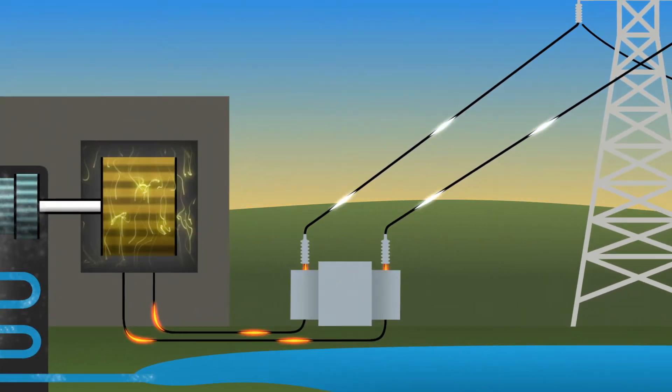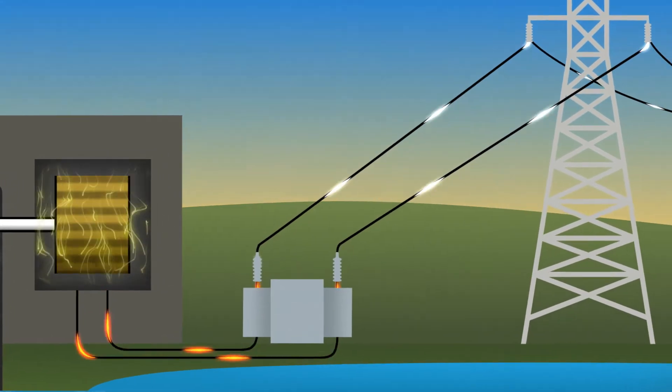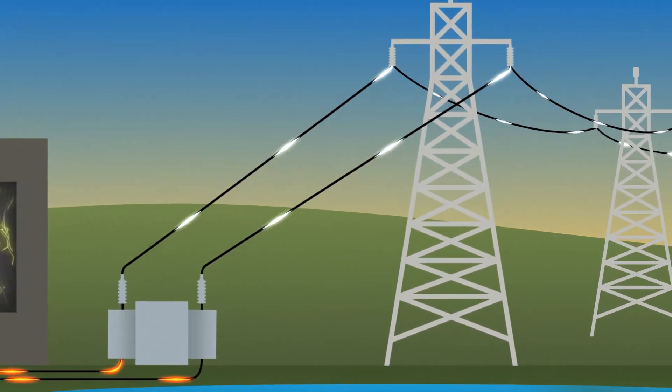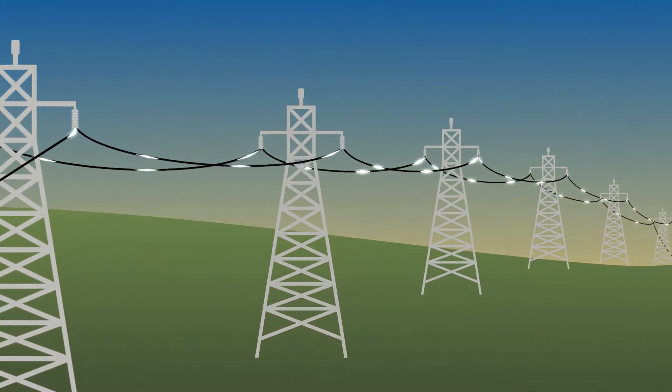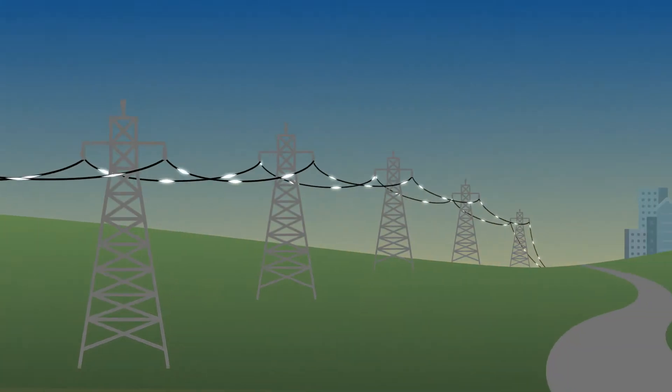Before heading on its way, the electricity is boosted with step-up transformers to a very high voltage. Then it travels great distances on transmission lines held up by tall metal towers.